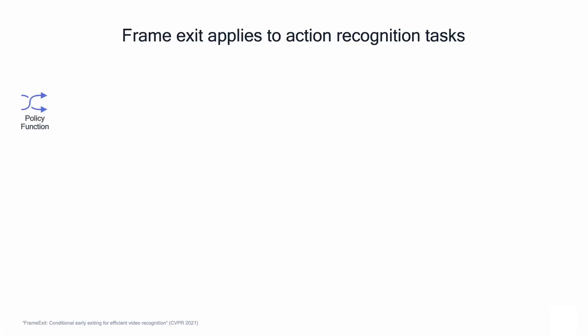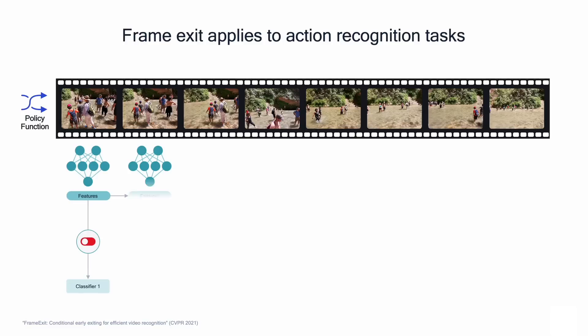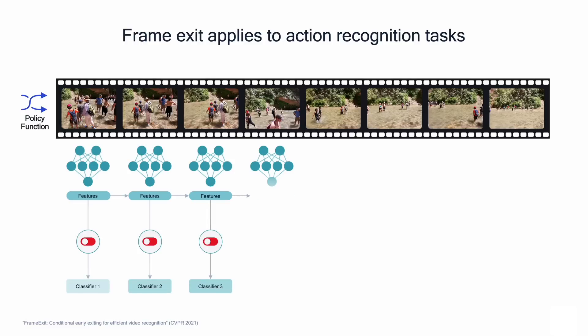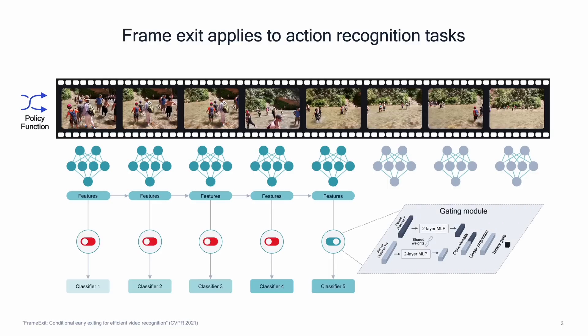Our model sequentially observes sampled frames from a video up to a current time step. Then it uses a gating module to automatically determine the earliest exiting point in processing where an inference is sufficiently reliable.